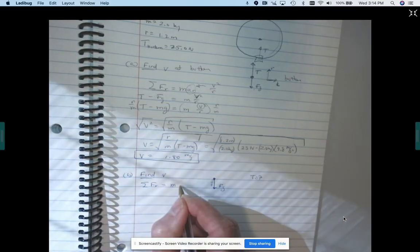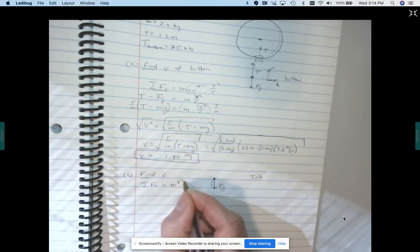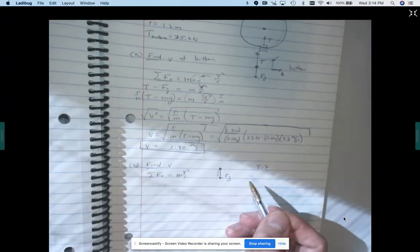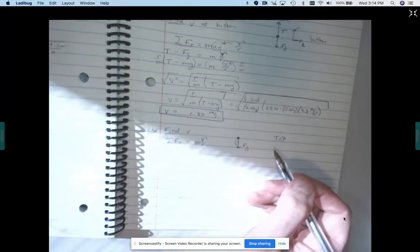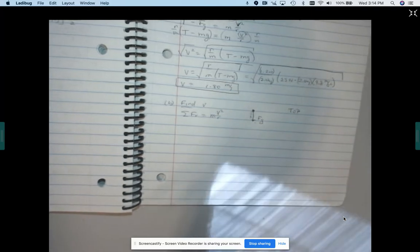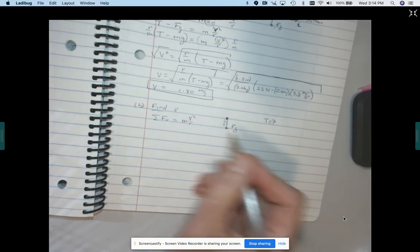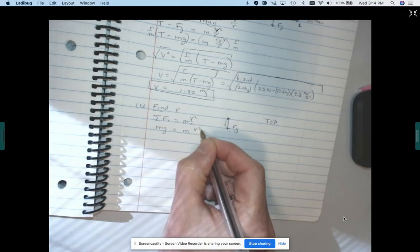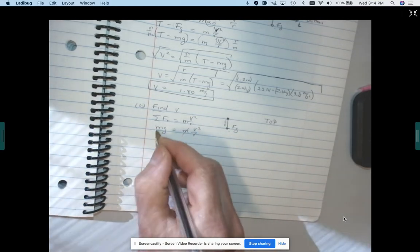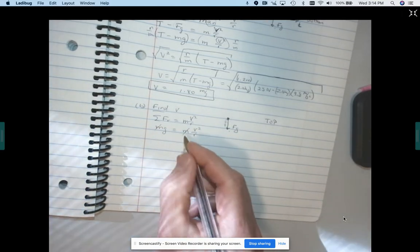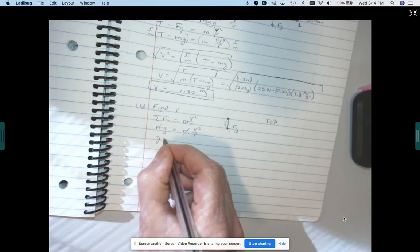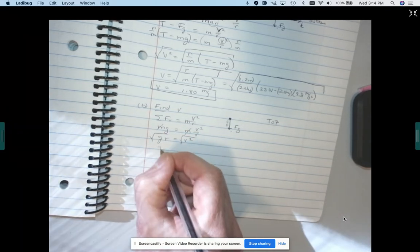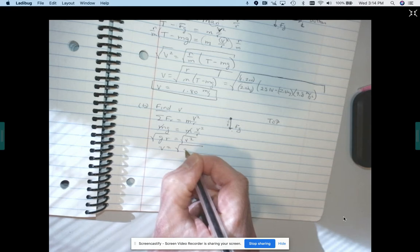So we have, again, just the sum of the forces in the radial direction is MV squared over R. Now our sum from the free body diagram is just going to be the force of gravity. So that's MG is MV squared over R. So our mass actually goes away. We can multiply both sides by R. So we get G times R on the side equals V squared. We'll take the square root. And V is the square root of G times R.